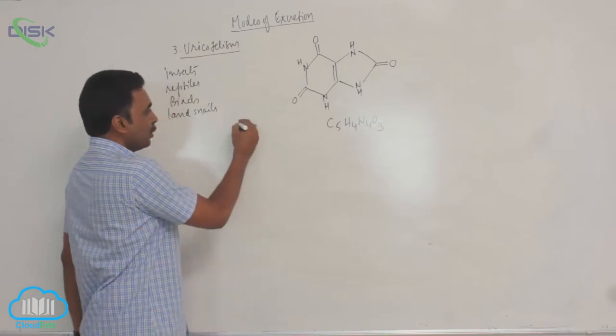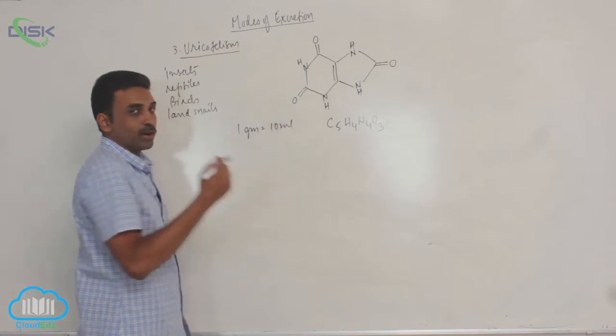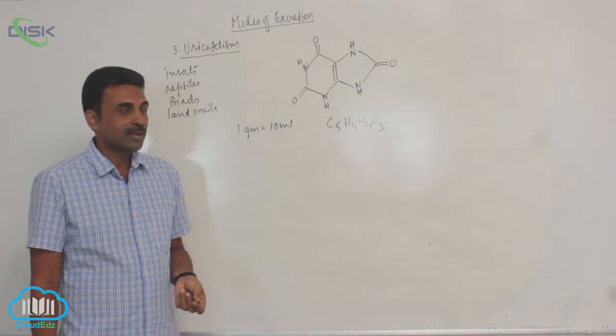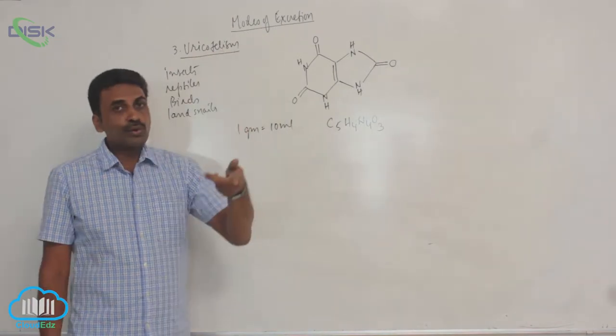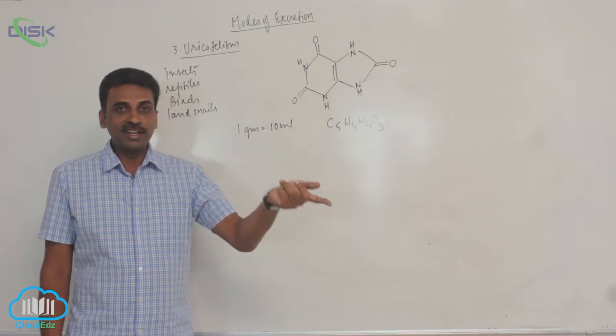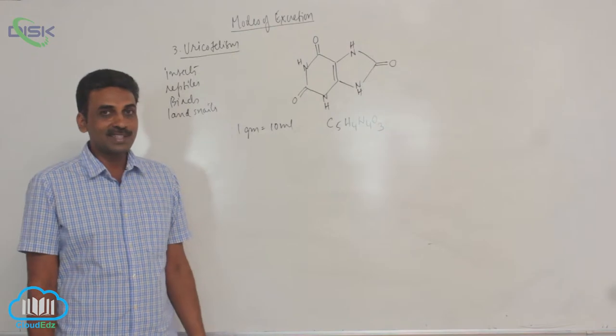Now to excrete 1 gram of uric acid it requires only 10 ml of water. Extremely small quantities. Even in uricotelic animals the first formed excretive product is ammonia. It is later converted into urea and later finally converted into uric acid.